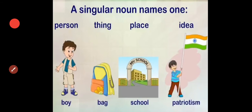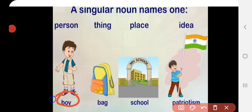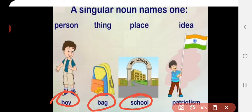Let us understand the meaning of singular noun. A singular noun names only one person, one thing, one place, and one idea. For example, a boy means only one person. Things like bag, pencil, table, pen — a singular noun can also be a school, meaning only one school. An idea such as patriotism is also a singular noun.